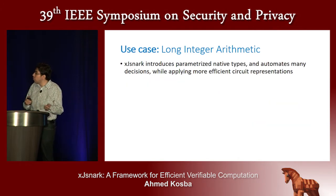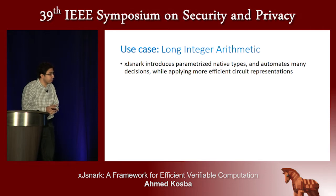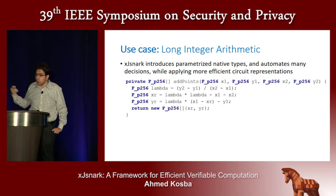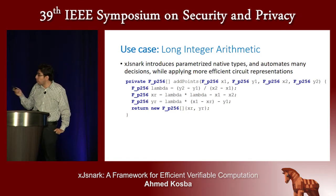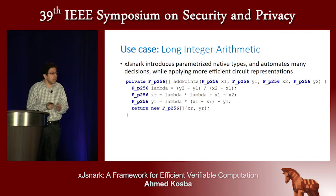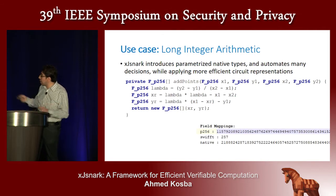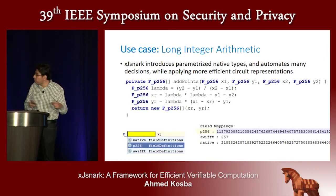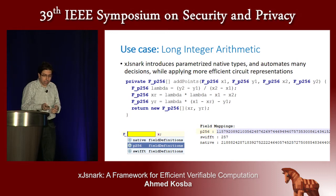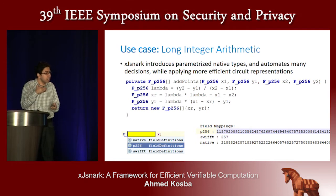What XJSNARK tries to do is introduce parameterized native types and automate all of these decisions while producing even more efficient circuits. In our framework, the programmer writes code that looks like the actual equations. This is not hard-coded for a certain field — the programmer can define whatever field they want the circuit to operate on. The programmer can work with long fields, short fields, or even the native field, and the backend adapts its implementation according to the circuit structure and the chosen field.